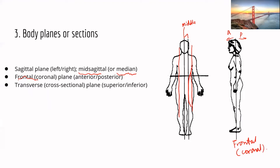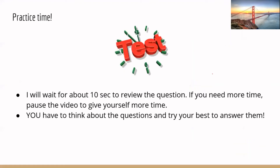The last one is the transverse or cross-sectional plane. This is the only plane that runs through the body horizontally. It divides your body into superior and inferior. Those are the three body planes.